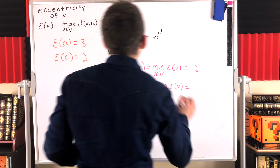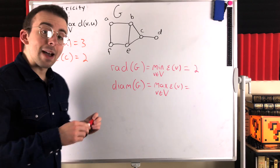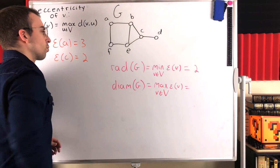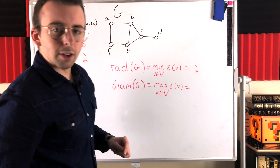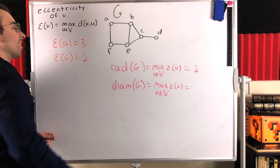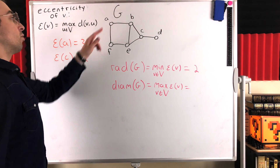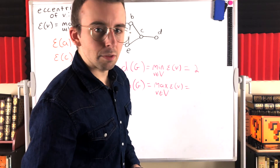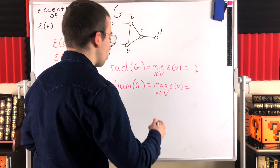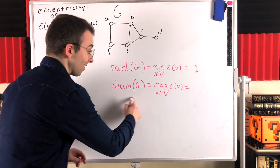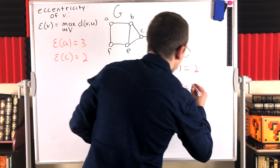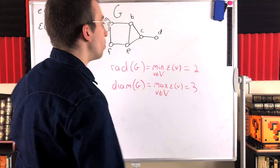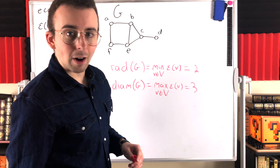So what is that for our graph g? Again, it's the maximum eccentricity. If you looked at all the eccentricities of these vertices, you'd find that they never exceed three. And since at least one of the vertices does have an eccentricity of three, the maximum eccentricity — and thus the diameter of the graph — is three. That's the greatest distance between any two vertices in the graph.